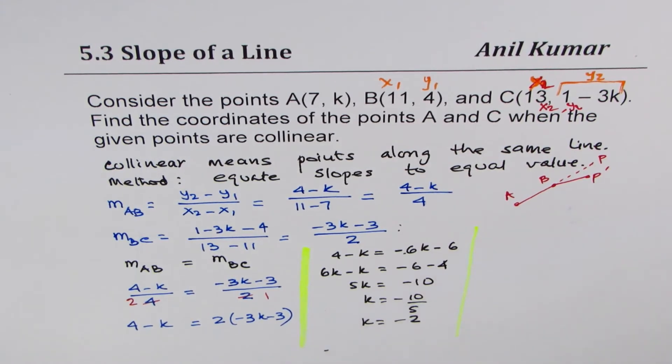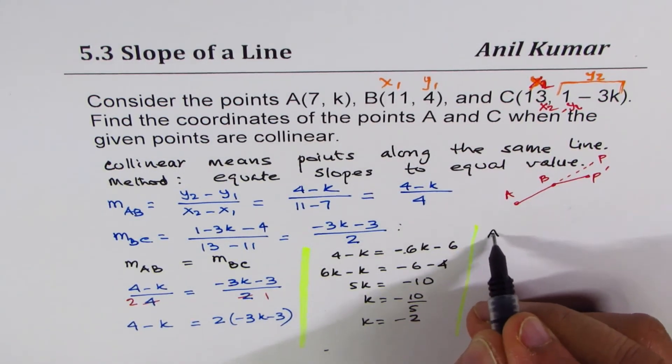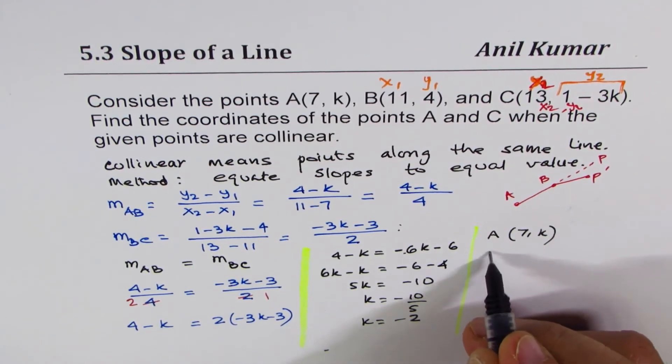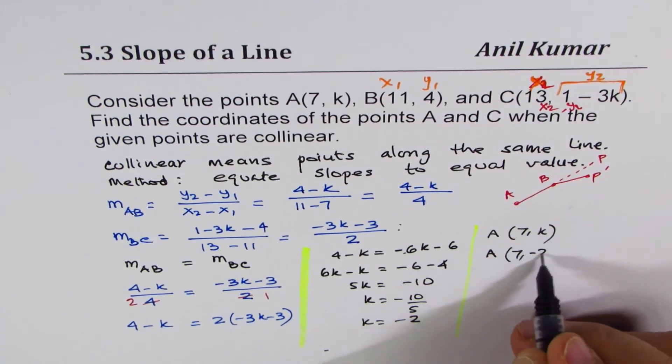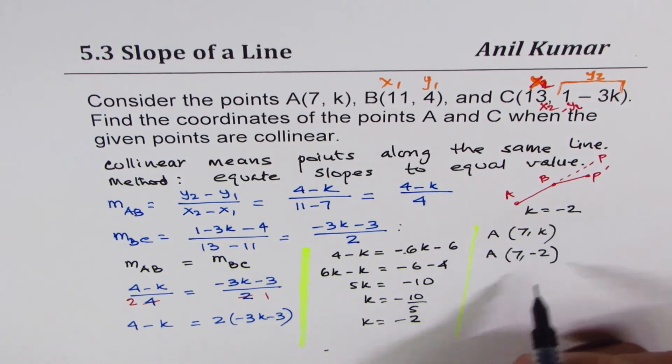So you have a value of K. Once you get the value of K, you can always substitute that back into the point. So A, which is given to us as 7K, can now be written as A is 7 minus 2, since K is equals to minus 2. So we get point A.